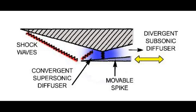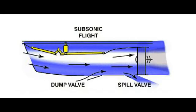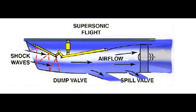Air velocity will drop to approximately Mach 0.8 in the wake of the final shockwave and then to Mach 0.5 by diffusion. The figure shown illustrates a movable wedge that provides a similar function of convergence, divergence, and shockwave formation. It also has a spill valve to dump unwanted ram air overboard at high speed, as many high-performance aircraft have an excess of mass flow at cruising speeds.